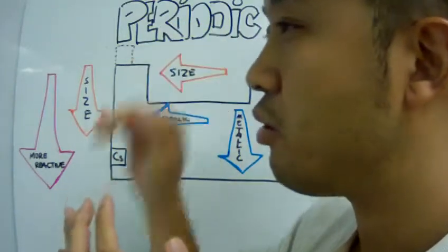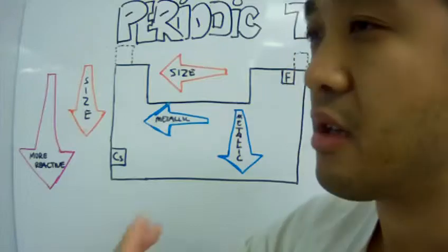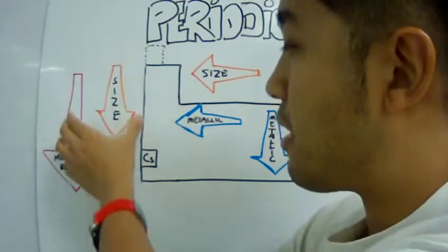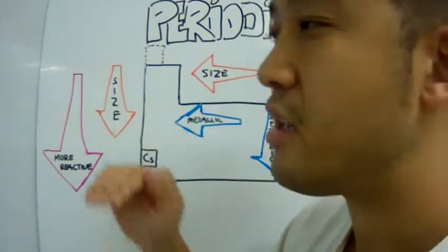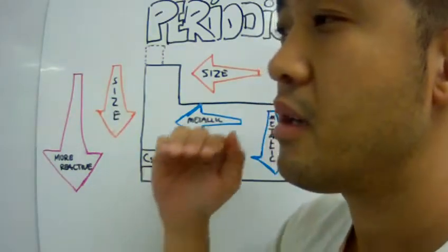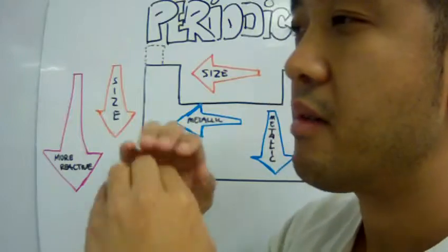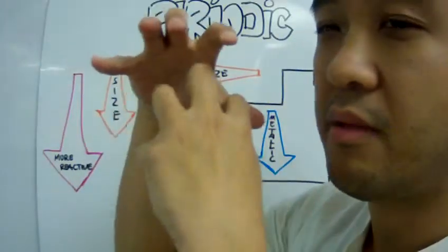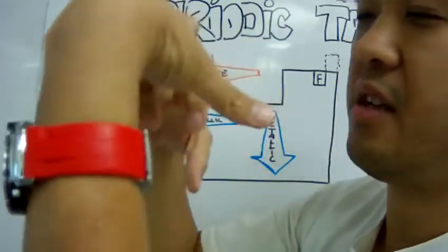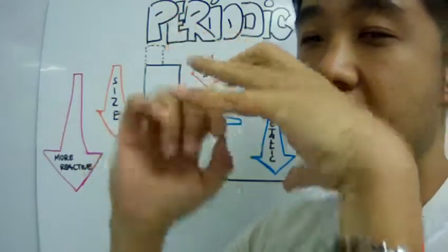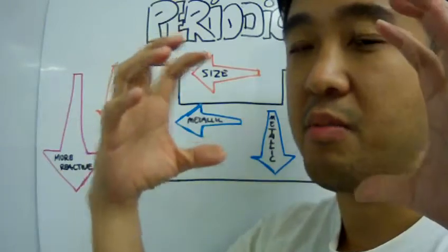As you go down the group, the atomic size of the elements should increase — it should get bigger as you go down the group. The reason is that as you go down the group, you add energy levels. Each energy level encompasses the energy level inside it, so as you add more energy levels, you can see the size of the atom gets bigger.